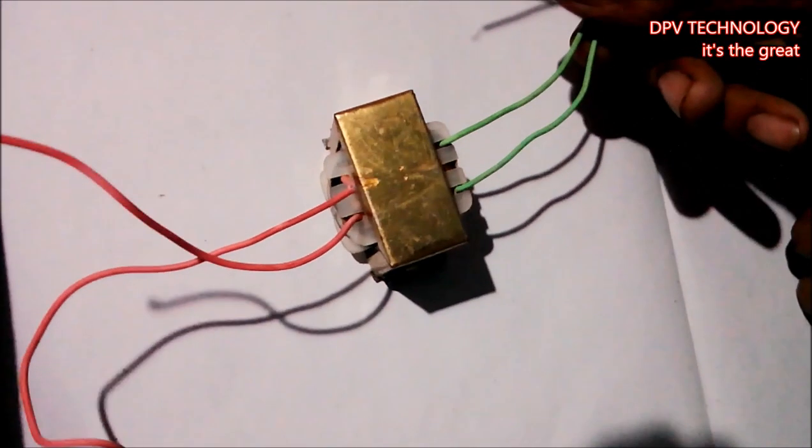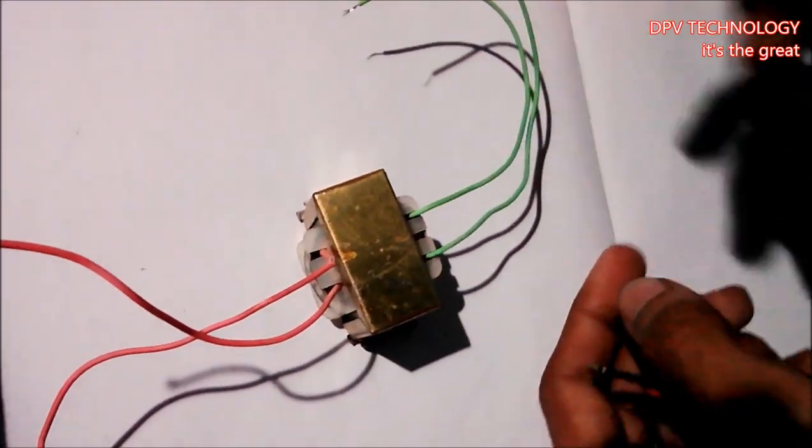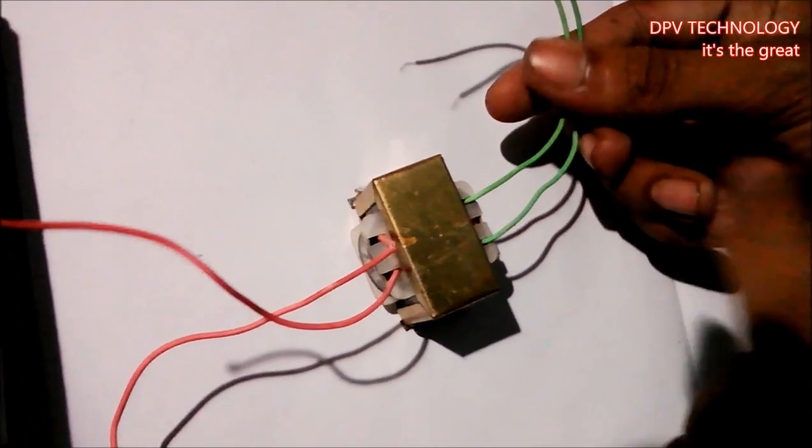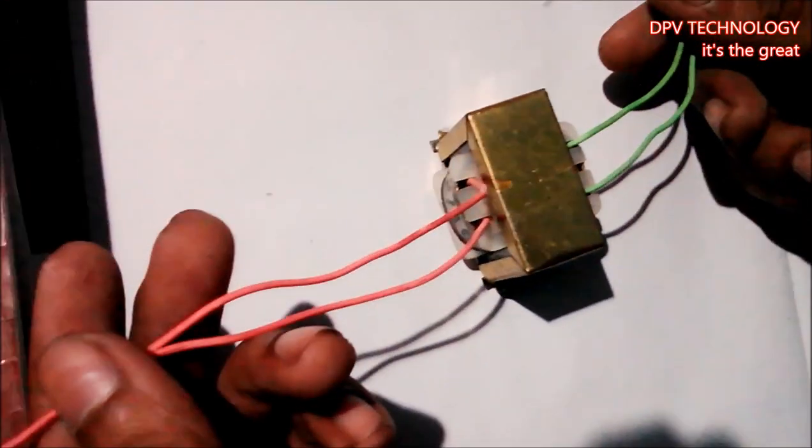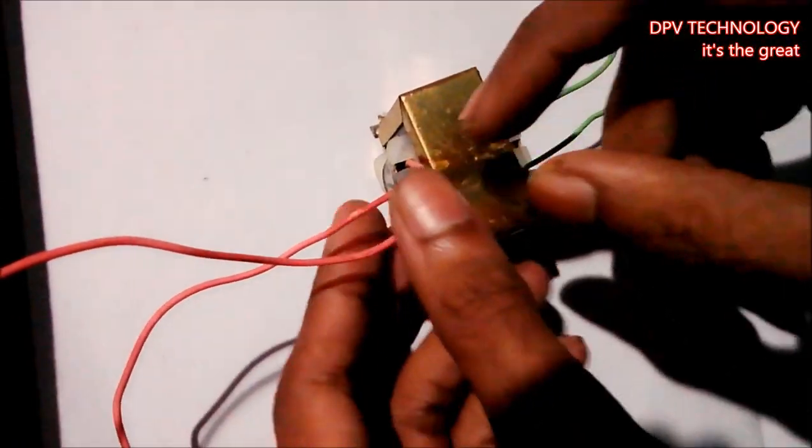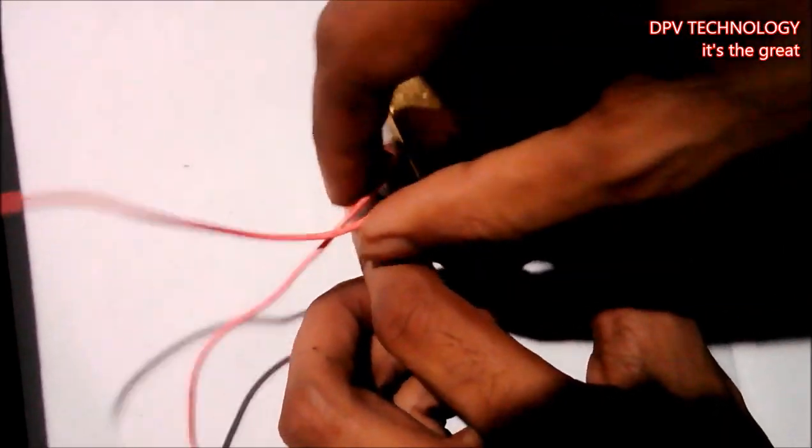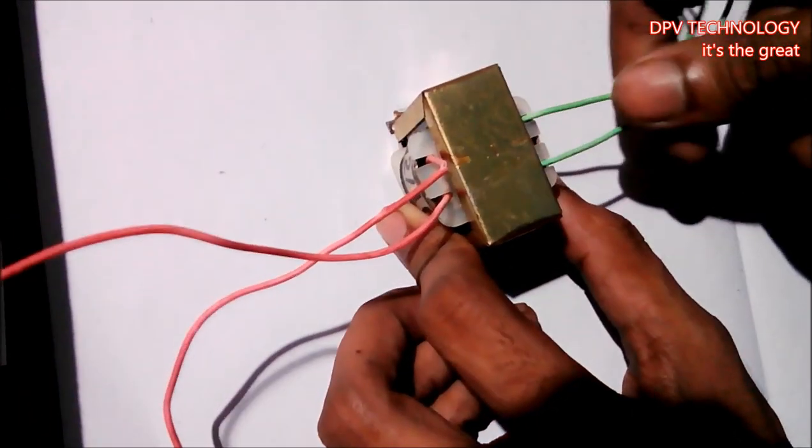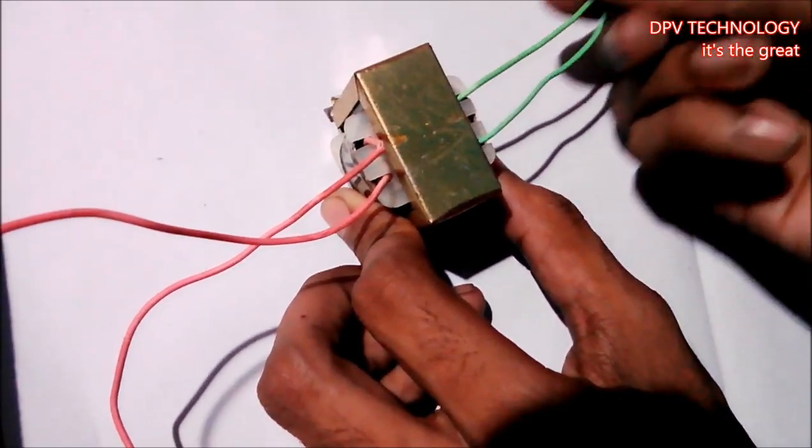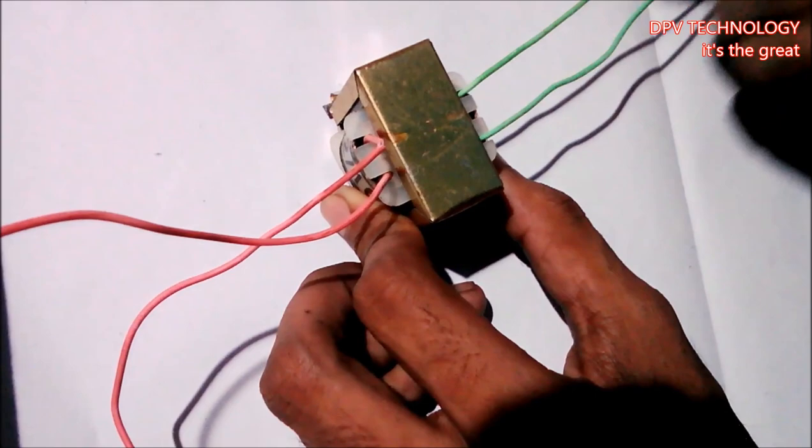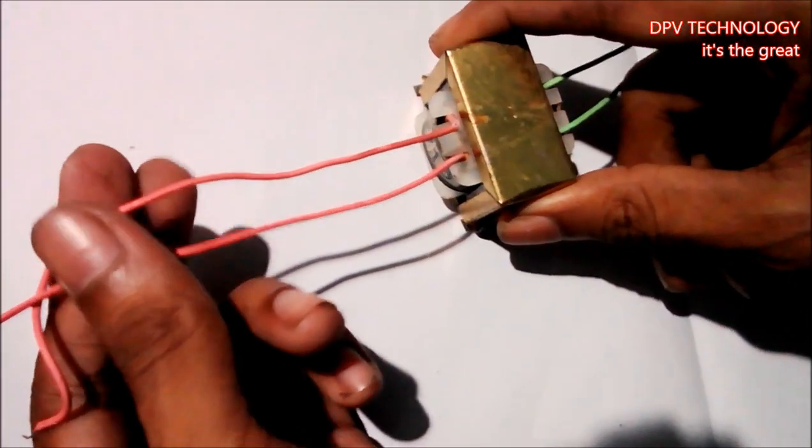Here we have 1.6 kilo-ohms. So this is the secondary side. The resistance of the secondary side is always lower than the resistance of the primary side. This is because the primary side has more turns than the secondary side. Lower resistance means secondary side, and higher resistance means primary side.